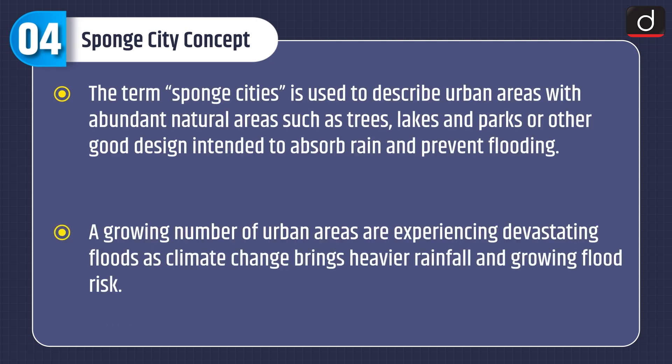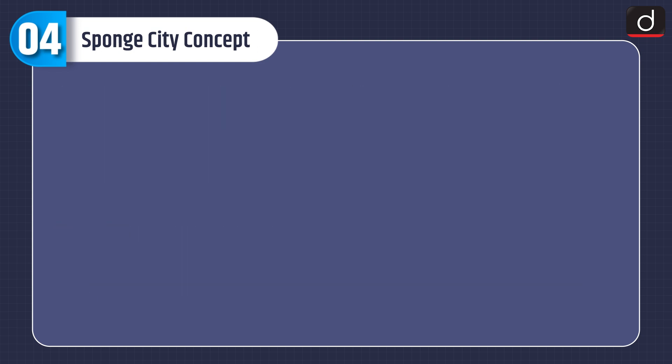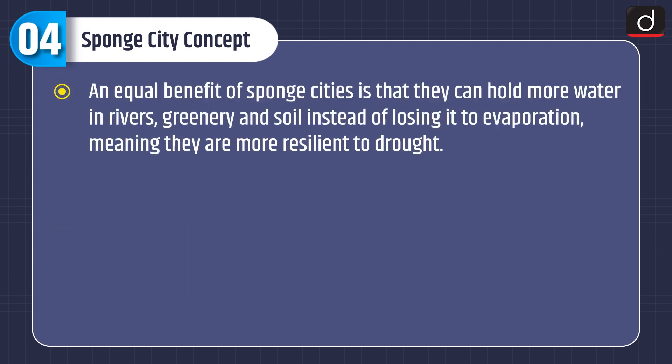The term 'sponge cities' describes urban areas with abundant natural features such as trees, lakes, and parks, or other good design intended to absorb rain and prevent flooding. A growing number of urban areas are experiencing devastating floods as climate change brings heavier rainfall. An added benefit of sponge cities is that they hold more water in rivers, greenery, and soil, making them more resilient to drought.